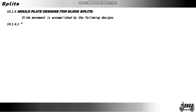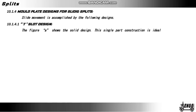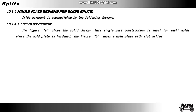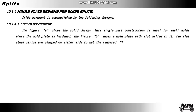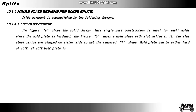Mold plate design for sliding splits: slide movement is accomplished by the following designs. T-slot design: Figure A shows the solid design — the single-part construction is ideal for small molds where the mold plate is hardened. Figure B shows the mold plate with a slot milled in it; two flat steel strips are clamped on either side to get the required T-shape. Mold plates can be either hard or soft; if soft, a wear plate is required below the slide.